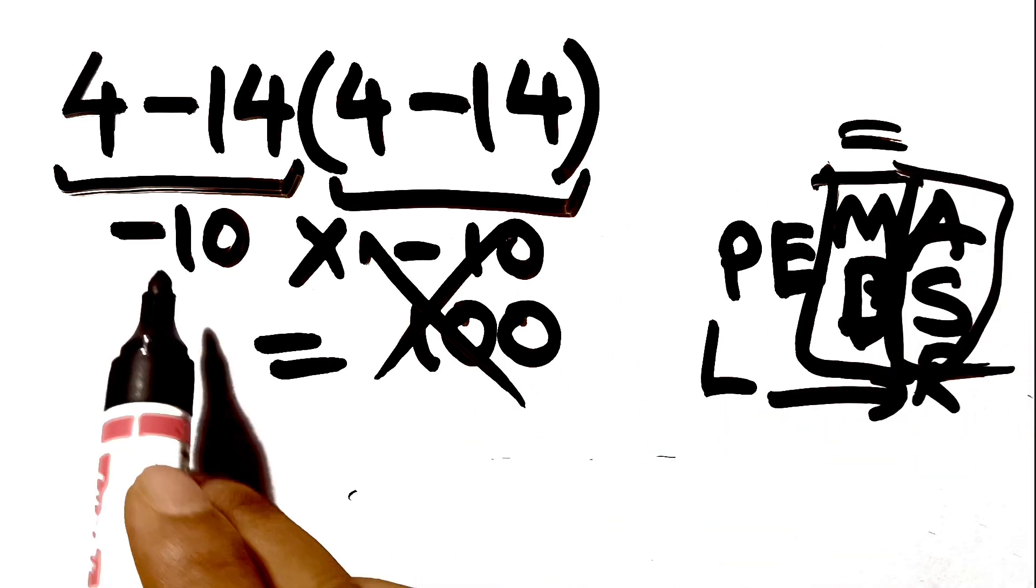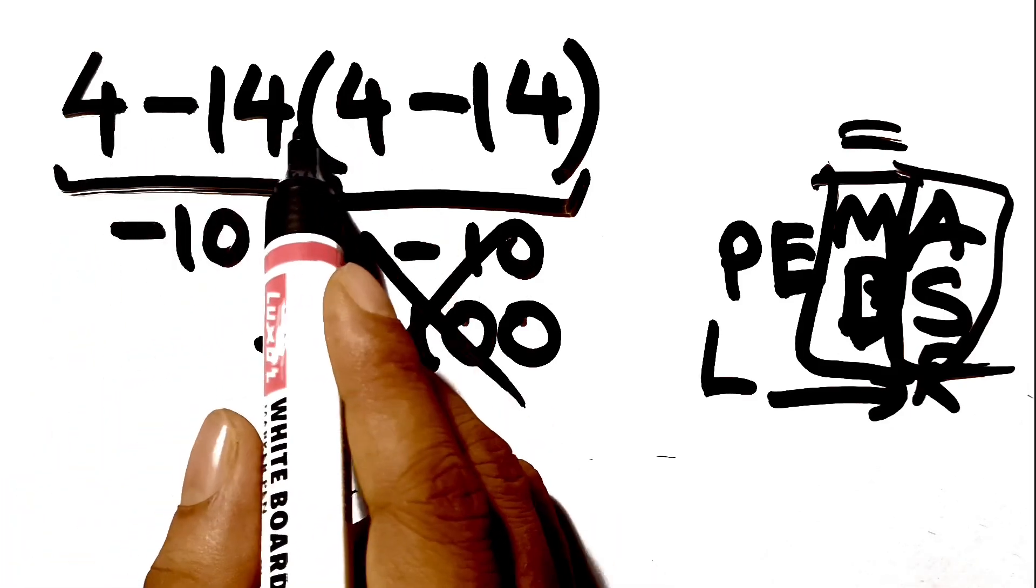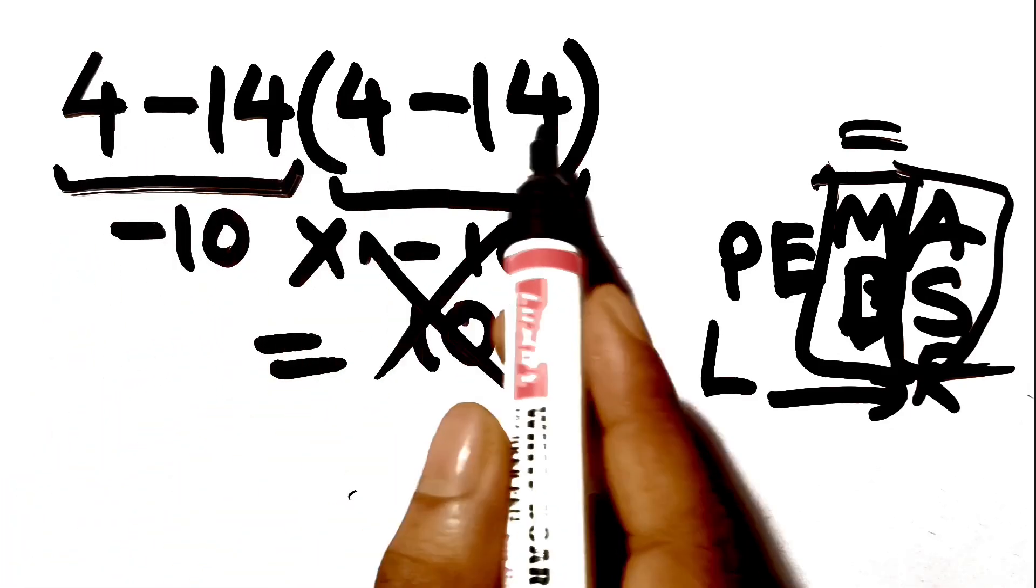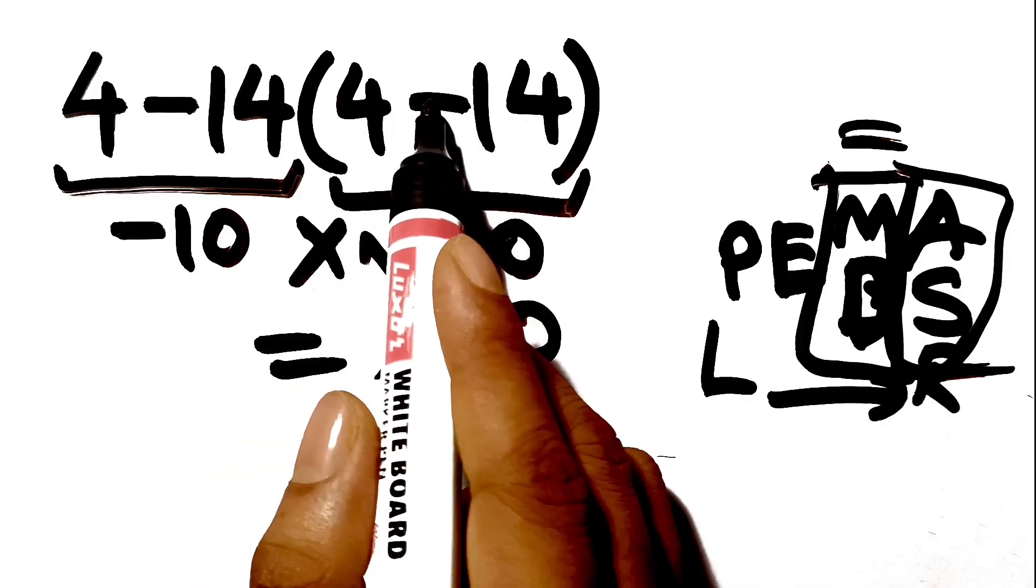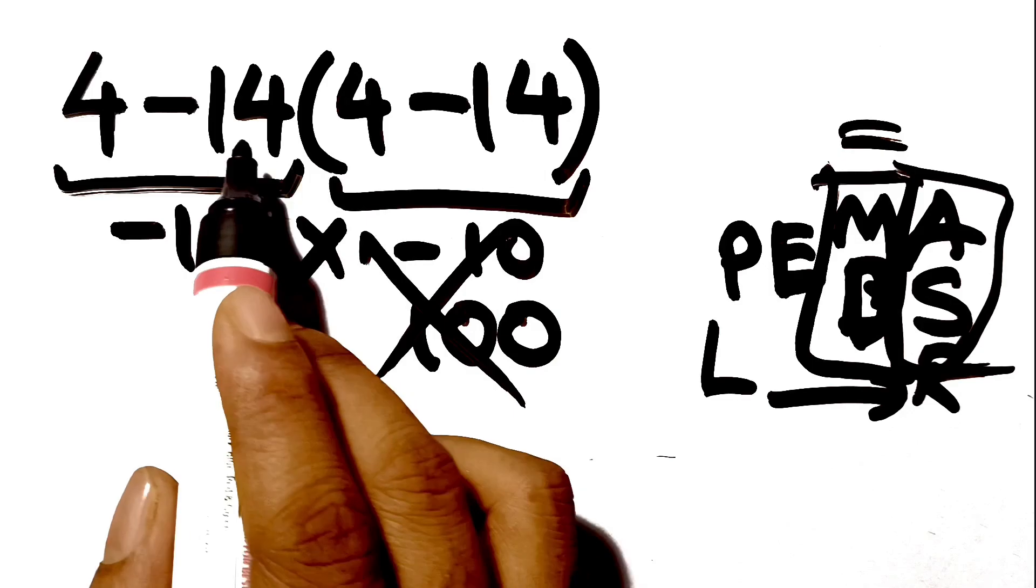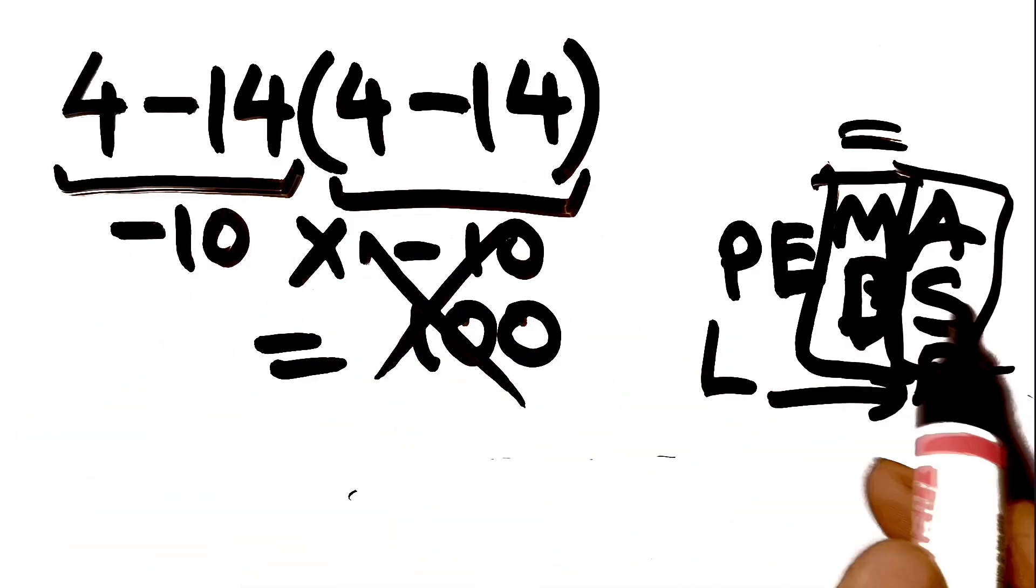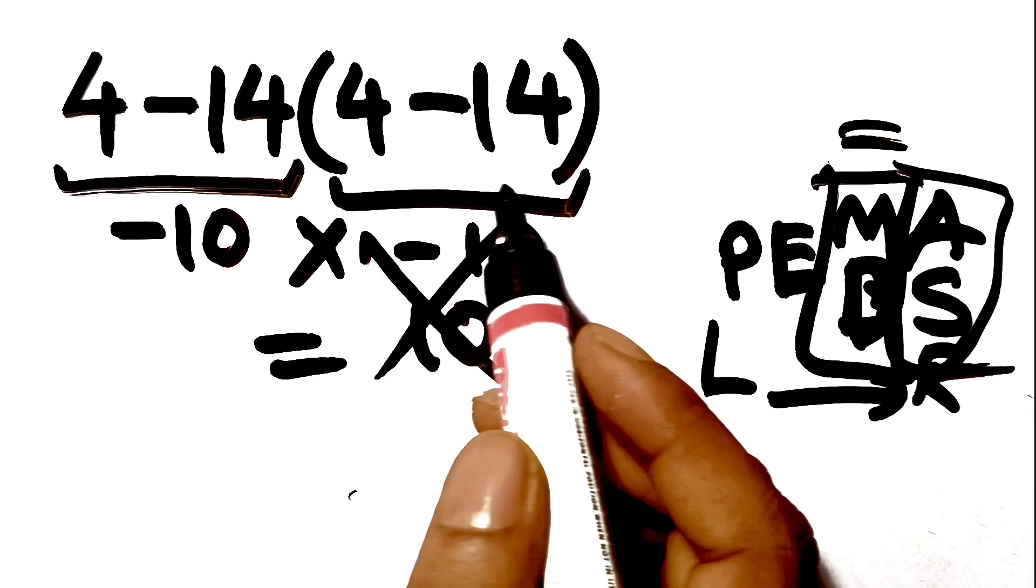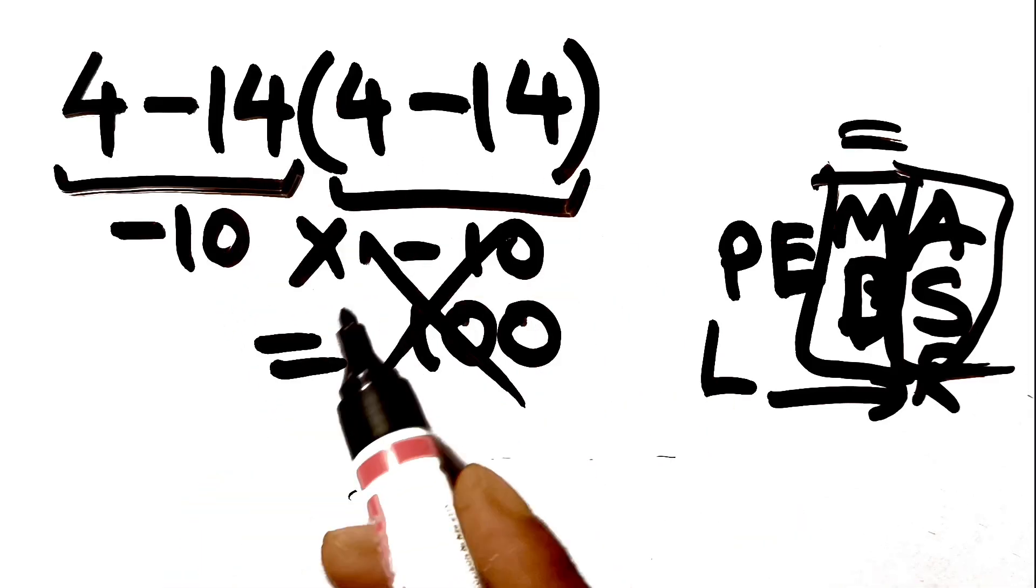In this expression, we have one subtraction, one multiplication implied by the number next to the parenthesis, and one parenthesis. Inside this parenthesis, we have another subtraction. Here we have a multiplication because in mathematics, when a number is placed next to a parenthesis, it means multiplication, and we usually don't write the multiplication sign for brevity.